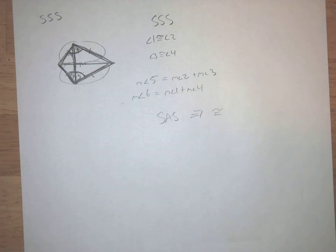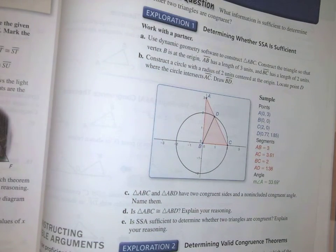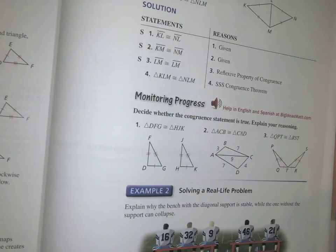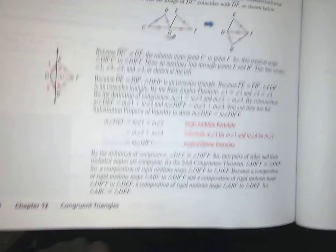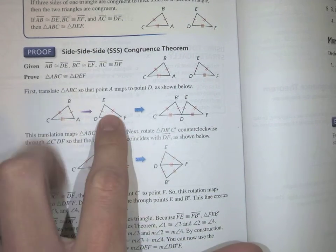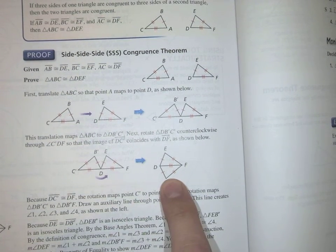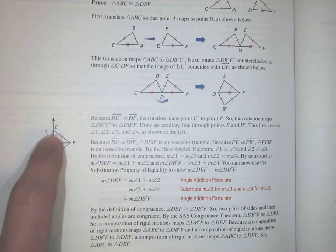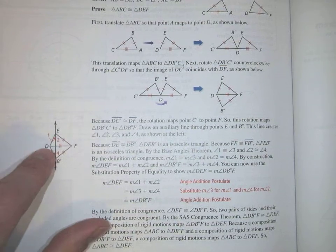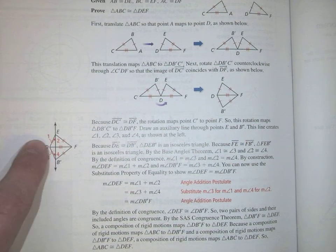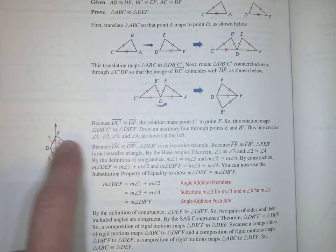That proof is in your book on page 618, if you want to look at it. They start with two triangles that have side-side-side, use congruence transformations to flip them around, then draw that auxiliary line. The numbering is different but it's the same idea: if two is congruent to four and one is congruent to three, then one plus two is congruent to three plus four, which gives you side-angle-side on the top and bottom triangle. I'm not going to ask you to prove that one because it's long and complicated, but that's the idea.